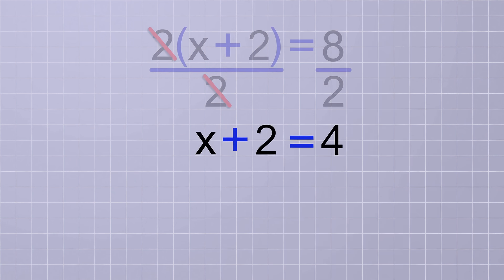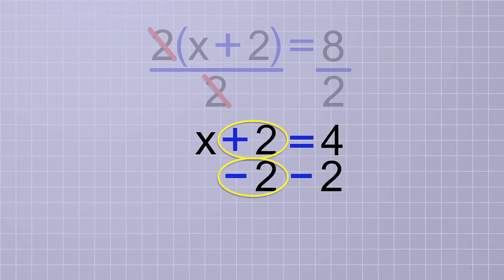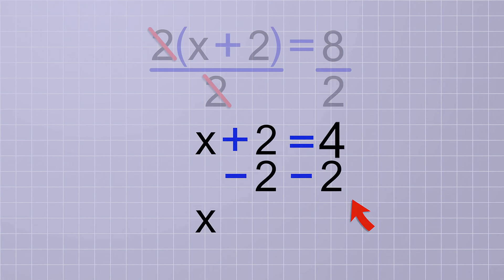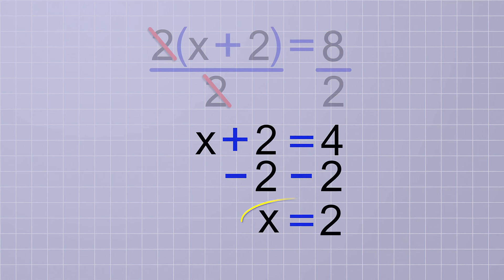Next, we just need to subtract 2 from both sides. On the first side, the plus 2 and the minus 2 cancel out, leaving x all by itself. And on the other side, we have 4 minus 2, which is 2. So for this equation, x equals 2. And now you can see how grouping operations differently in our equation results in different answers.